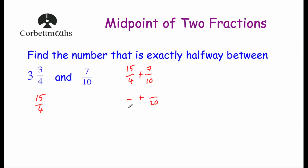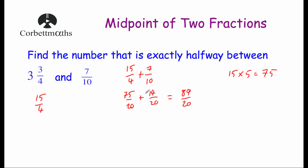To get from four to twenty we multiply by five, so we multiply the numerator fifteen by five. Ten times five is fifty, and five times five is twenty-five, so fifteen times five is seventy-five — giving us seventy-five twentieths. To get from ten to twenty we multiply by two, so seven times two is fourteen — giving us fourteen twentieths. Adding seventy-five twentieths and fourteen twentieths: seventy-five plus fourteen is eighty-nine. So we get eighty-nine twentieths.